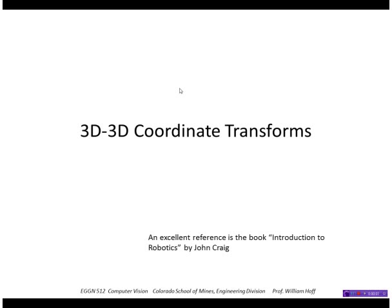I'm going to be talking about 3D to 3D coordinate transforms. An excellent reference is this book, Introduction to Robotics by John Craig. It's a very clear description of coordinate transforms, rotations, etc., and I use the notation that he uses.